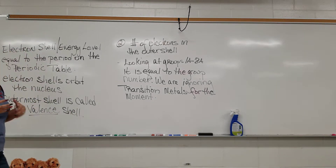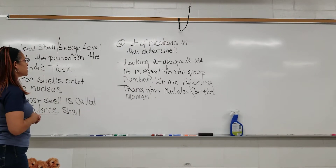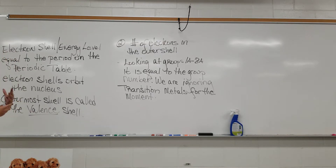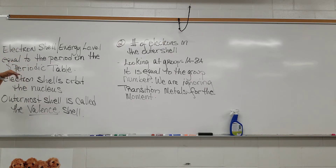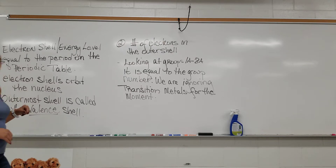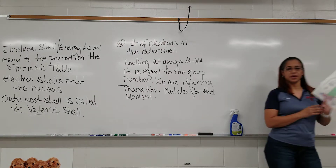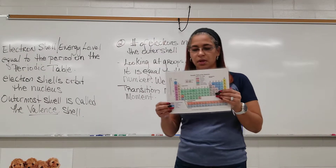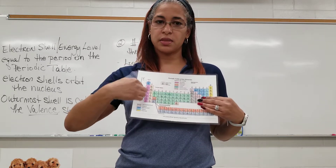In order to know how many shells each element has, the first thing you have to look at is what period it's in. The number of electron shells an atom has is equal to the period that element appears in on the periodic table. As a refresher, the periods go across and the groups go down.